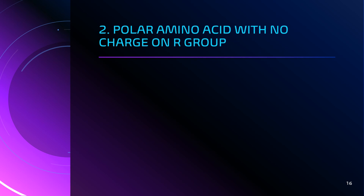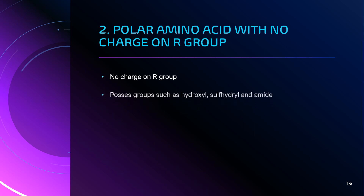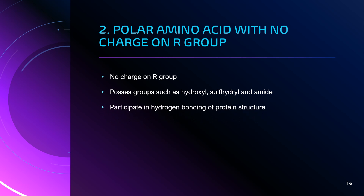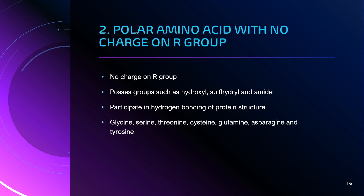The second category based on polarity is polar amino acids with no charge on their R group. They possess groups such as hydroxyl groups, sulfhydryl groups, and amide groups, and these amino acids participate in hydrogen bonding during protein structure formation. This category includes glycine, serine, threonine, cysteine, glutamine, asparagine, and tyrosine.